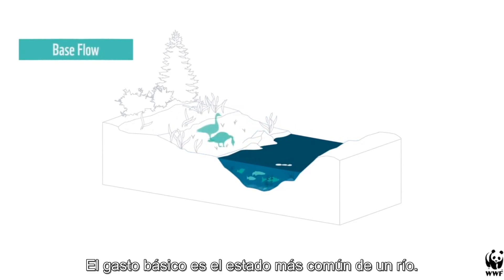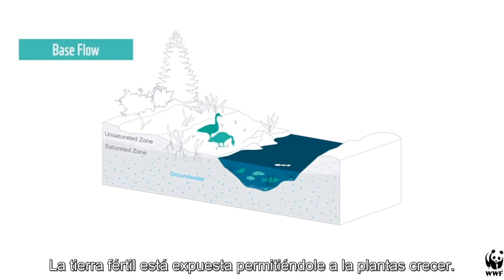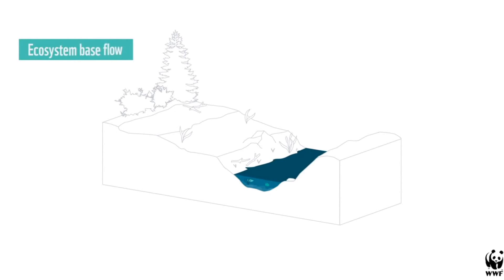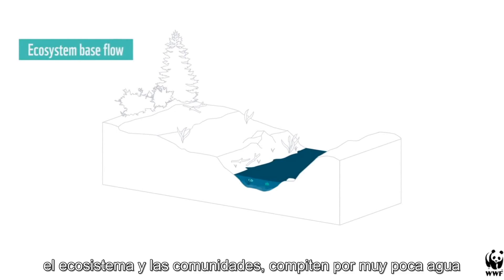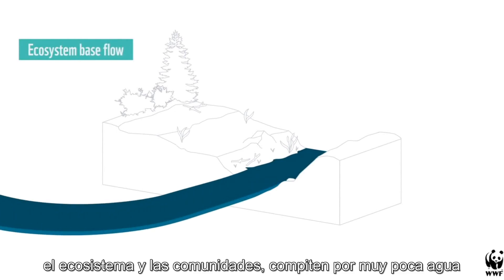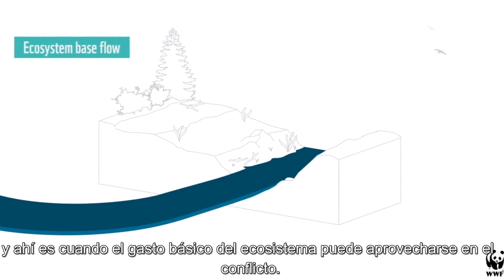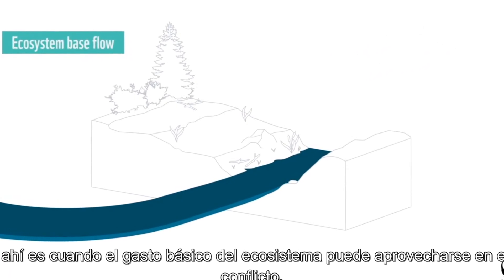The base flow is the most common state of a river. Fertile land is exposed, allowing plants to flourish. In times of very low flow, the ecosystem and community compete for very little water. That is when an ecosystem-based flow can be used to help reduce the conflict.